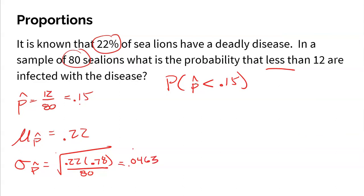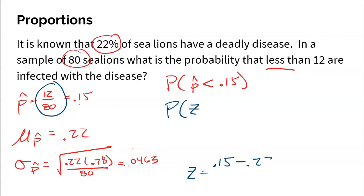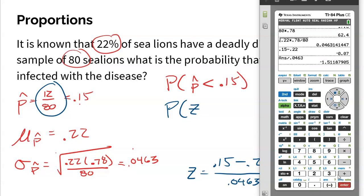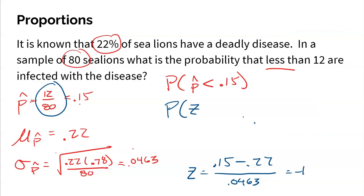To find the probability of getting fewer than 12 out of 80 sea lions infected — which is 15% — I compute the z-score: (0.15 − 0.22) / 0.0463 = −1.512. So finding the probability that a sample proportion is less than 15% is the same as finding the probability of a z-score less than −1.512 within this sampling distribution.